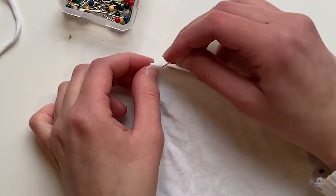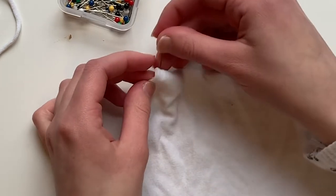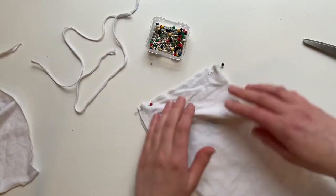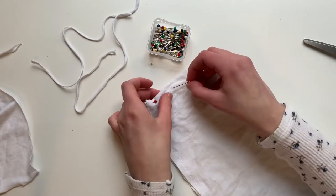You're going to pin the tie to the corner of the mask. Don't have the tie come out over the edge too much. Go ahead and pin the rest of the edge closed.